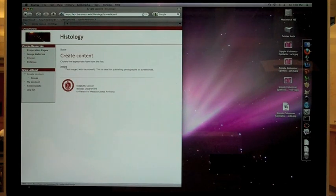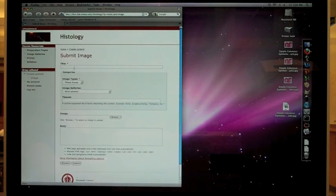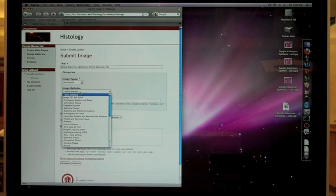Click Create Content, then Image. Fill out the fields appropriately. Make sure to select the correct image gallery.